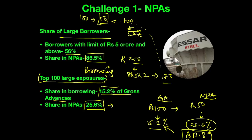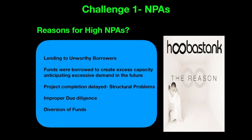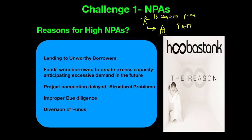Now let's understand the reasons behind NPAs as provided in Yojana and from various other sources. Number one is lending to unworthy borrowers. When the bank lends to subprime borrowers whose chances of paying back are very low, the chances of that borrowing turning into NPA increase. For example, a person earning Rs. 20,000 per month goes to the bank and wants a Tata Safari costing Rs. 15 lakh, with a monthly EMI of Rs. 20,000.